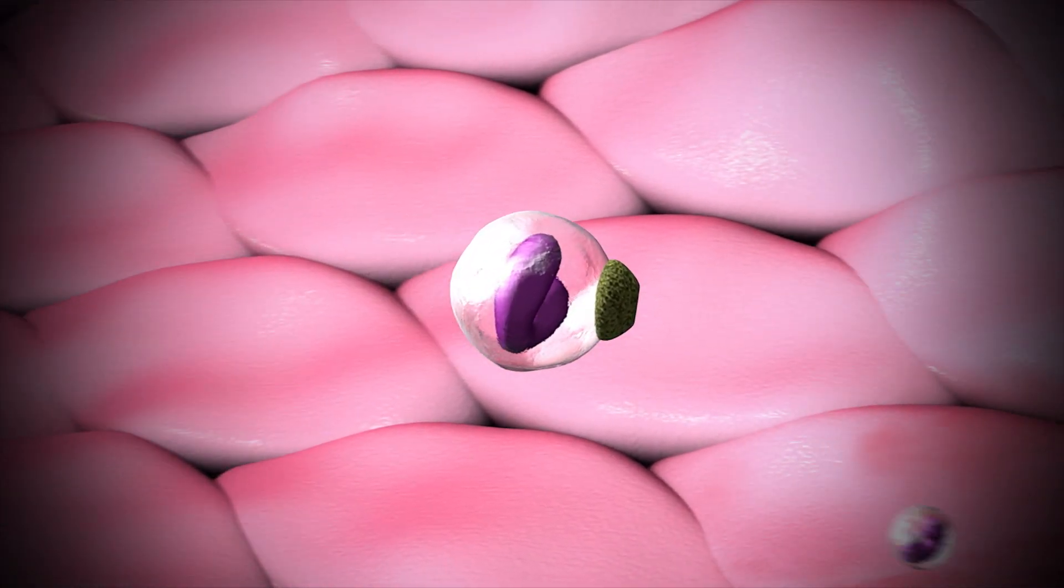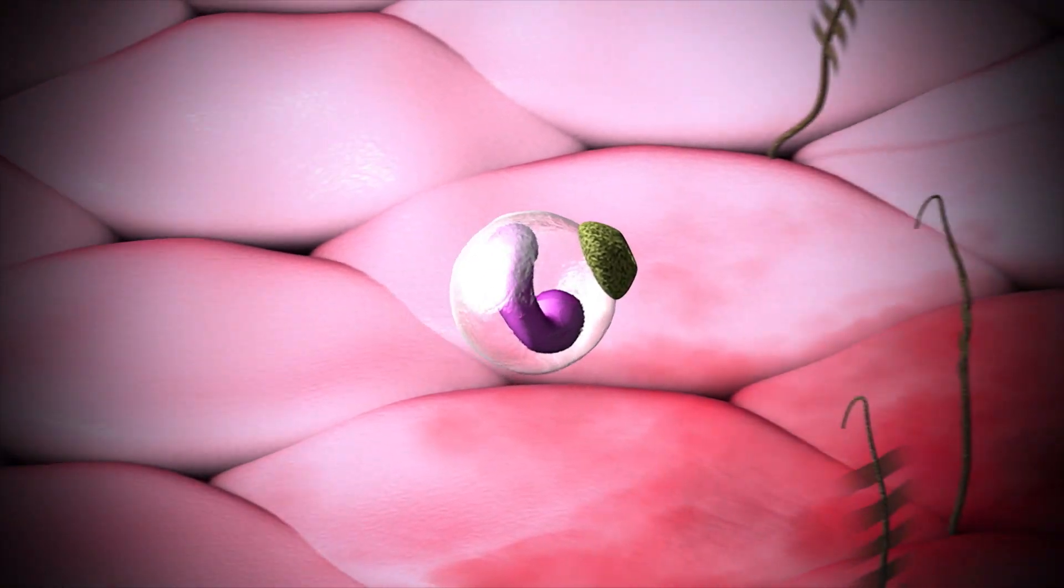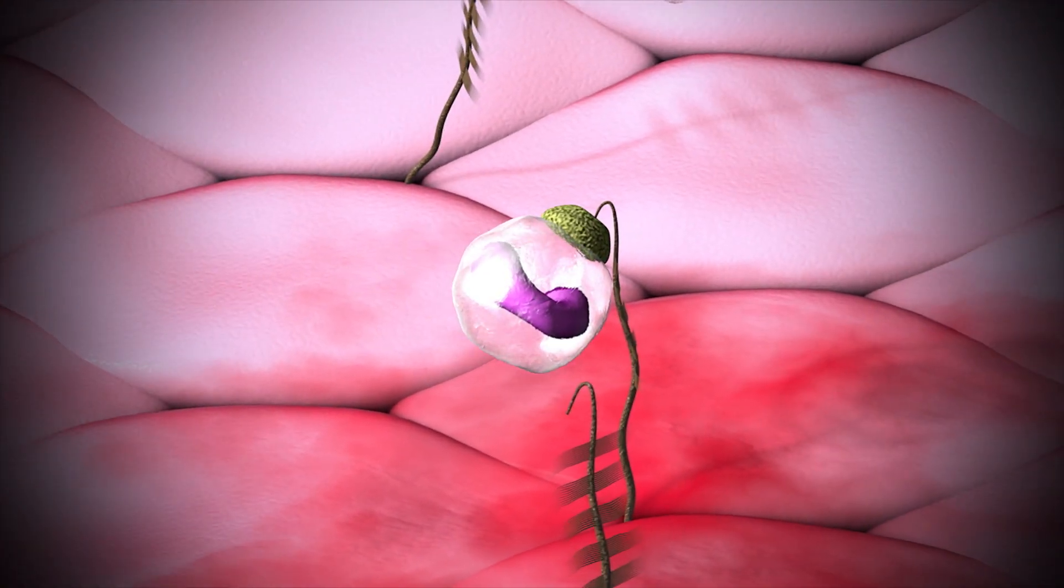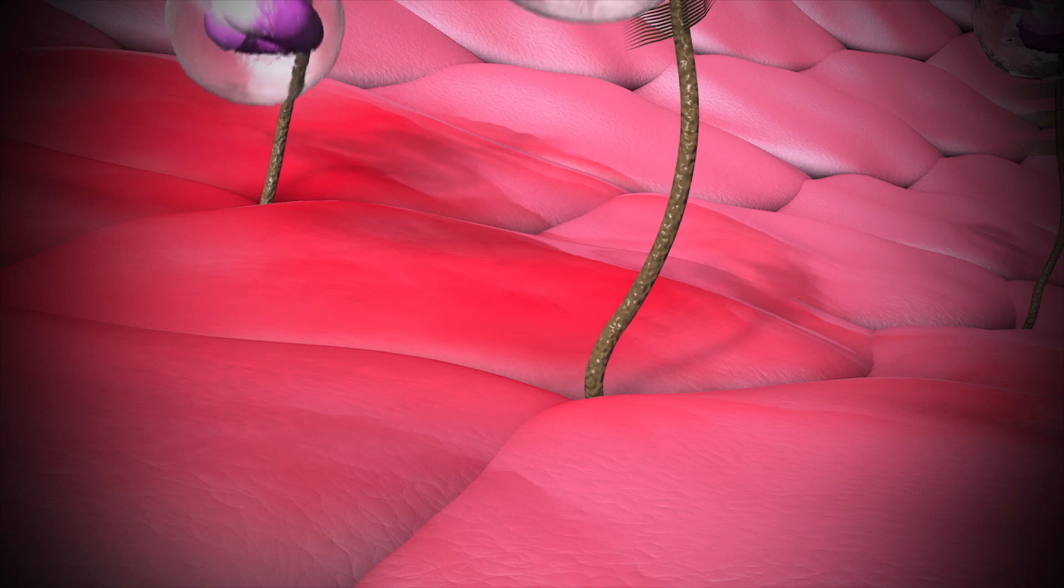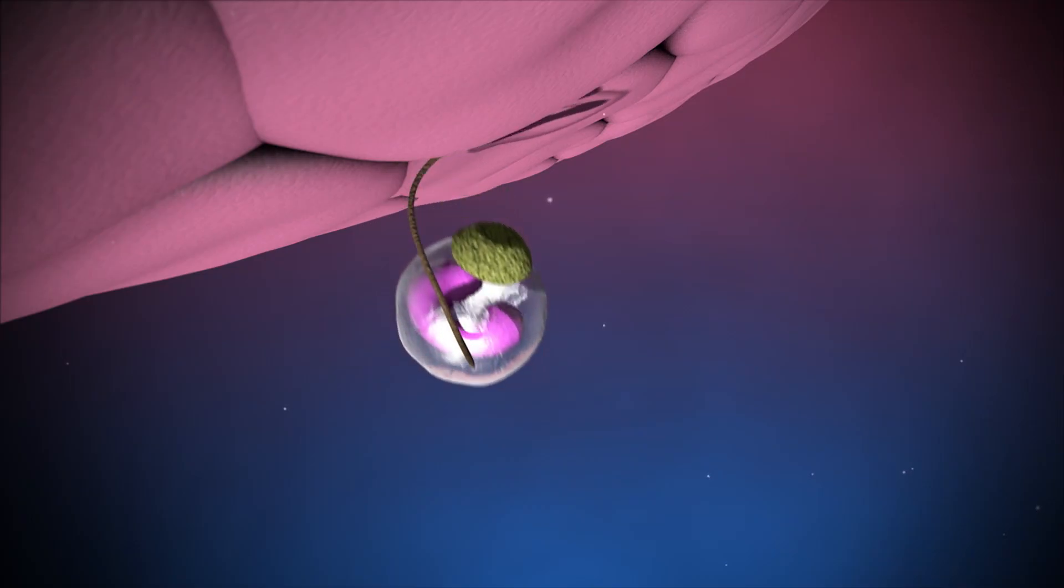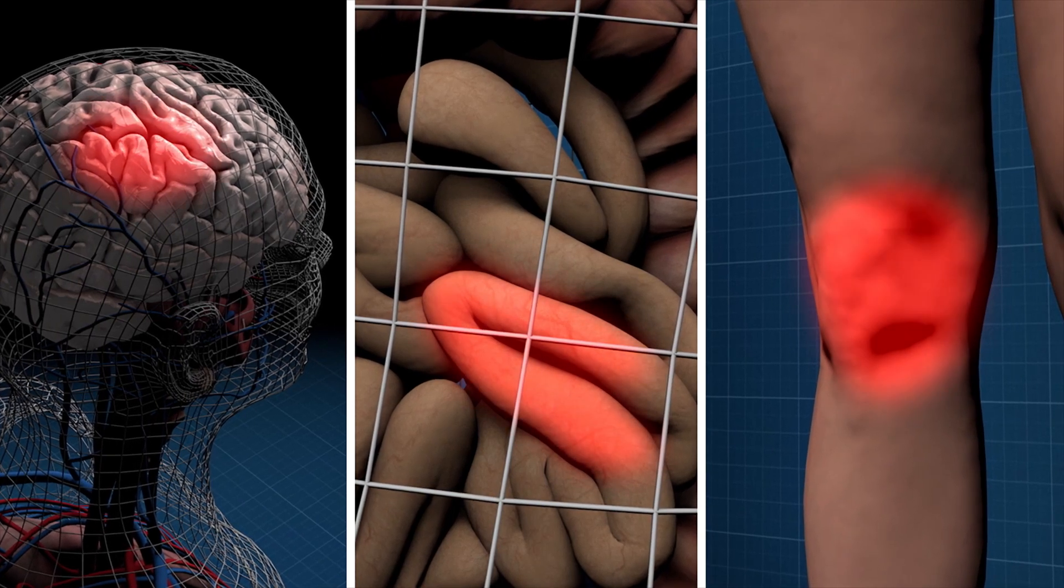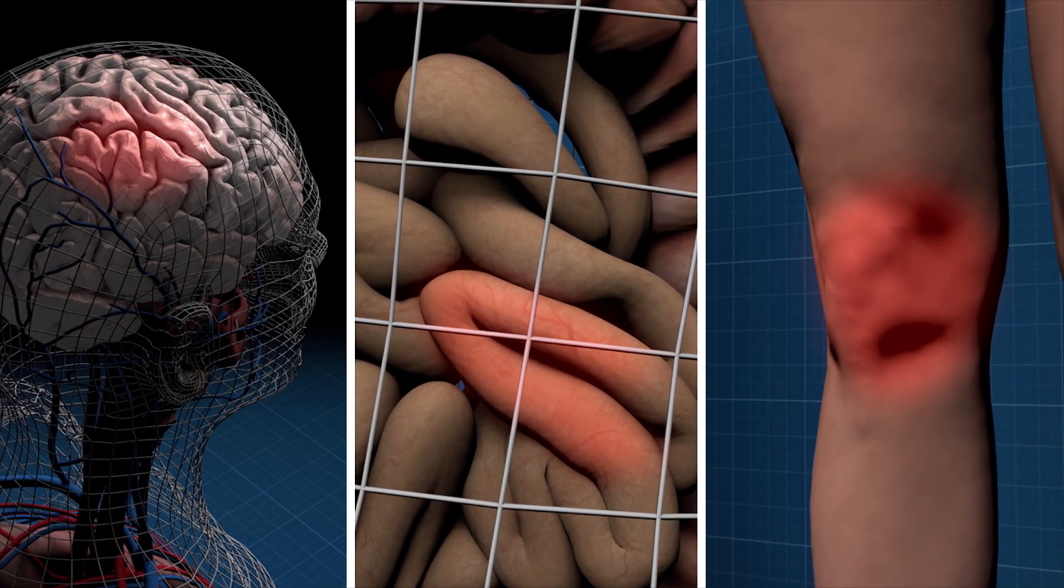In autoimmune diseases, the fractalkine immune system leads cells from the bloodstream into functional tissues in the body and creates an inflammation there. This can be seen in diseases such as MS, Crohn's disease, and arthritis.